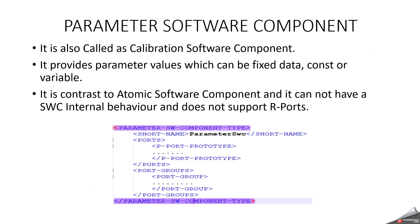Parameter software component is also called a calibration software component because it provides calibrated information. It is primarily used for accessing calibration parameters from the ECU and providing calibration parameters to other software components. You can have a separate software component to create multiple calibration parameters, and it can provide parameter values which can be fixed data, constant, or variable. It is in contrast to atomic software components in that it cannot have software component internal behavior, and it does not support R ports — meaning it only supports P ports. It is identified by the tag parameter software component type, with supports and support groups.